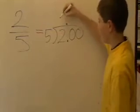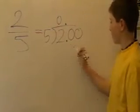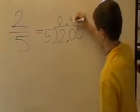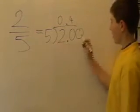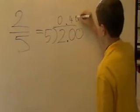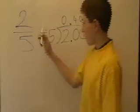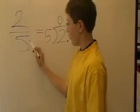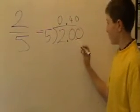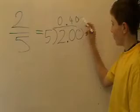5 into 2 we can't do. So 5 into 20 goes 4 times with none left over. And 5 into 0 goes 0. So our proper fraction, 2 fifths, is equal to our decimal fraction, 0.40.